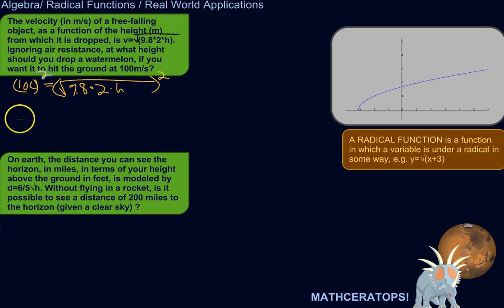So, 100 squared is, what is that? 10,000, I believe. It should be four zeros. Yeah. 10,000 is equal to 9.8 times 2 times the height in meters.